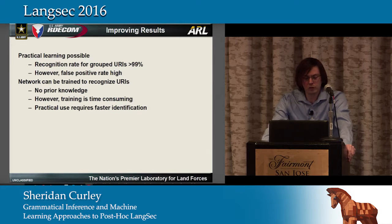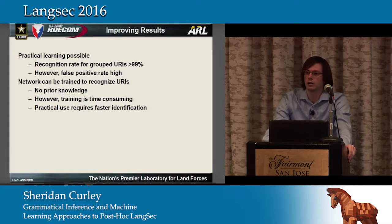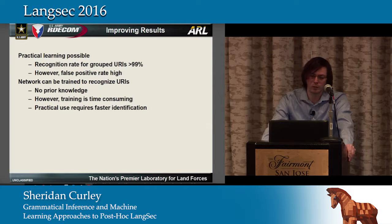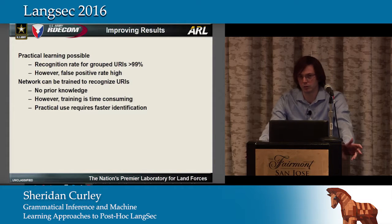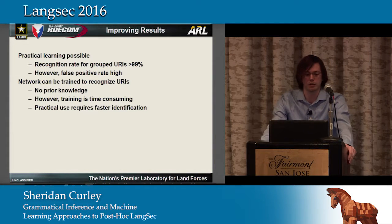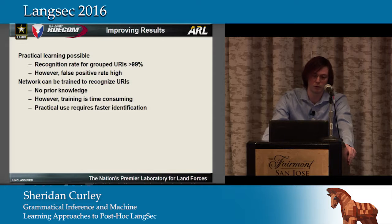We also did generation of URIs, which is theoretically possible since we did character-by-character learning. We are able to generate what would be considered reasonable-looking URIs, though whether they are actually valid on the server is a different question.